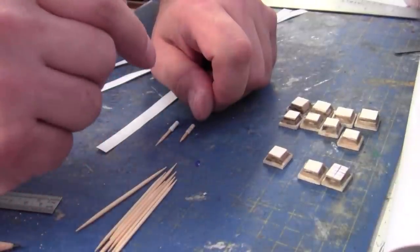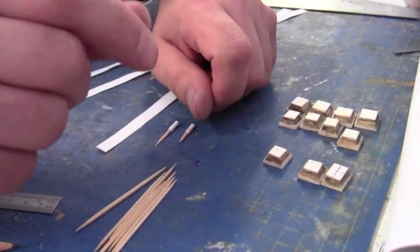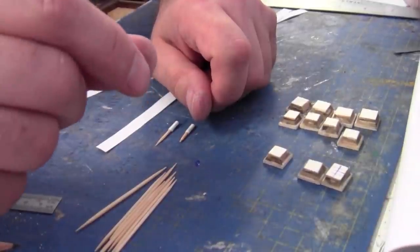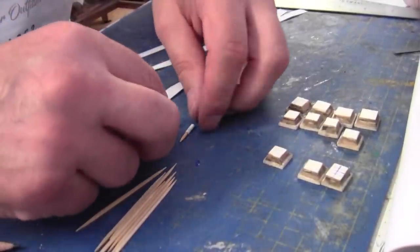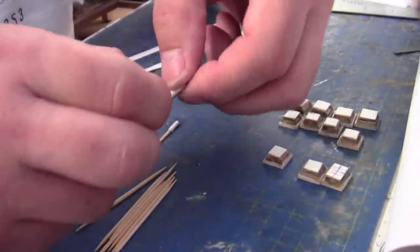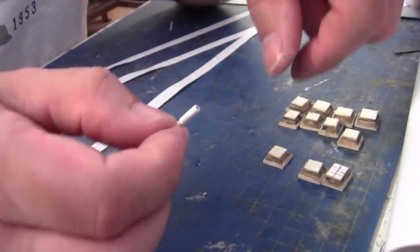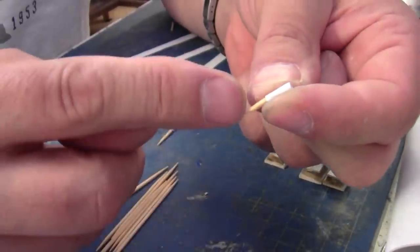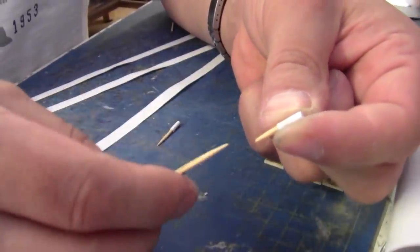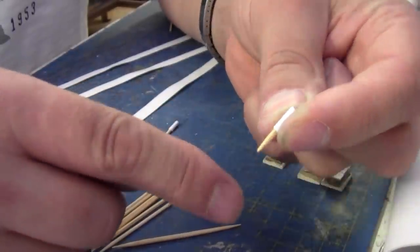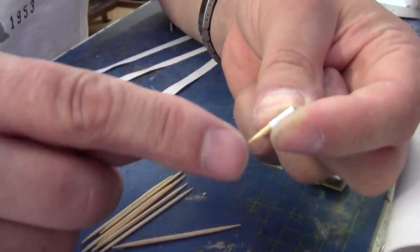Now we know that the Metcalfe chimney breasts are normally solid with a good few thicknesses of card. I've measured a Metcalfe chimney pot and they're roughly about 3mm thick. This is 3mm thick and what I've done is stuck it to a toothpick. I've allowed for at least 12mm to go into the card.